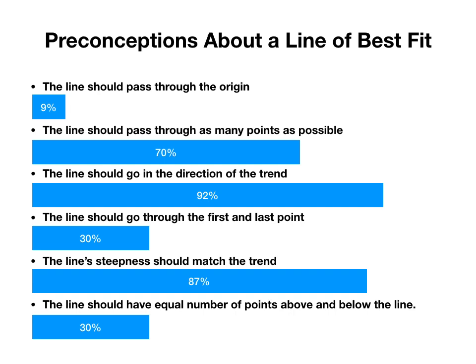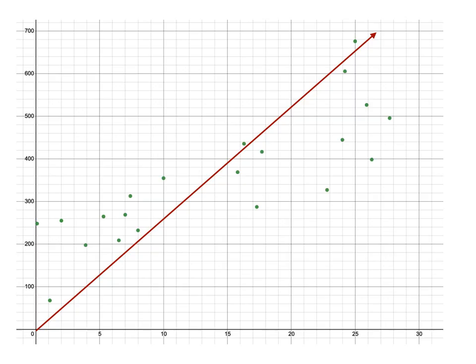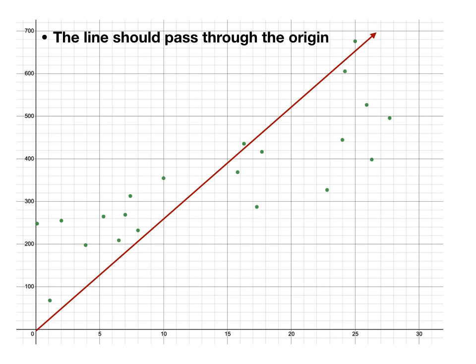Now let's look at an example scatter plot and investigate some of these preconceptions, similar to the Desmos activity but with a different scatter plot. In this example, the person thought the line should pass through the origin — they forced it through the zero-zero spot. At first glance it might seem like an okay trend line: the trend is clearly going upward, dots are higher on the right and lower on the left. Also, approximately half the points are above and half are below the line.